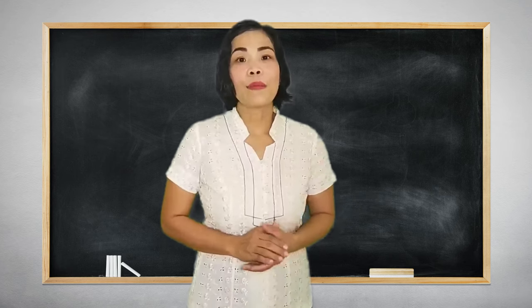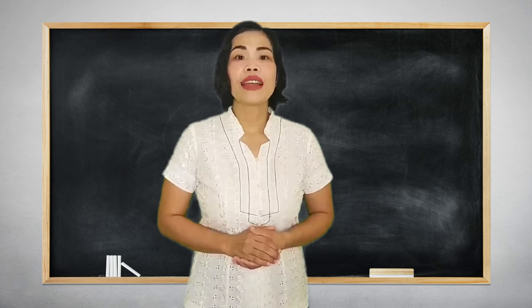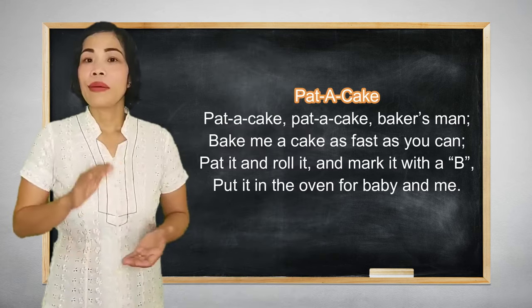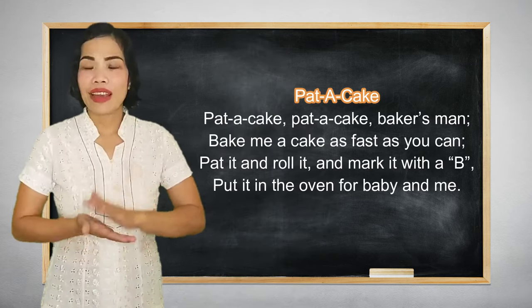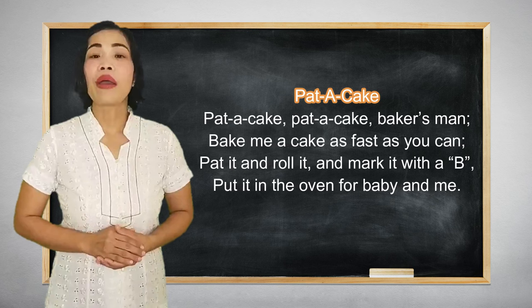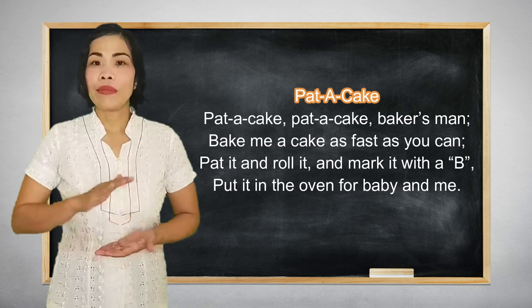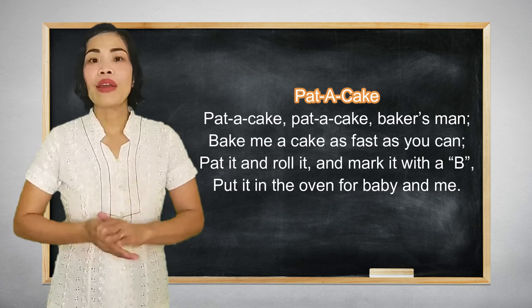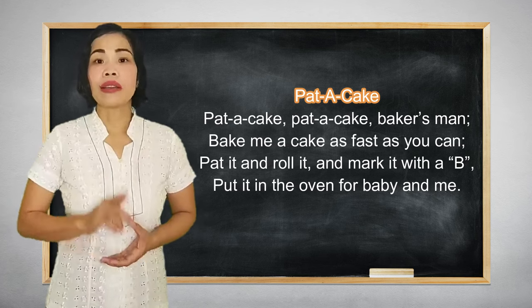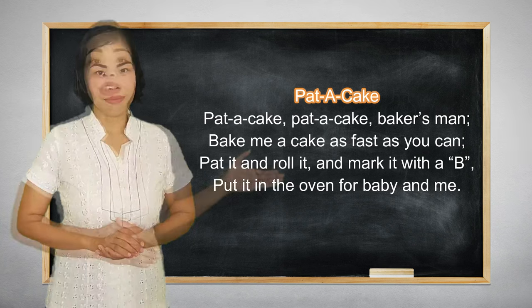Let's analyze a popular children's rhyme using Marxist literary approach. Pat-a-cake, pat-a-cake, baker's man. Bake me a cake as fast as you can. Pat it, roll it, and mark it with a B. And put it in the oven for baby and me.